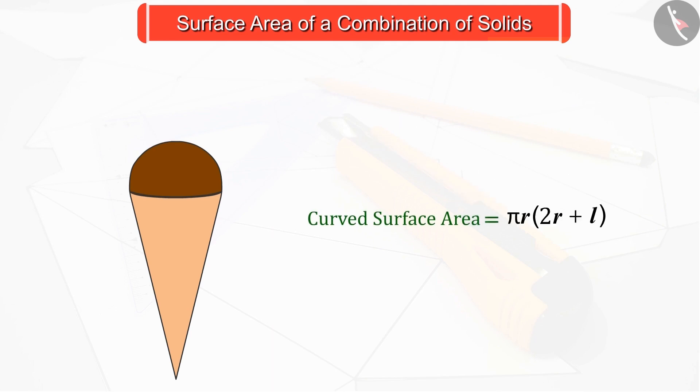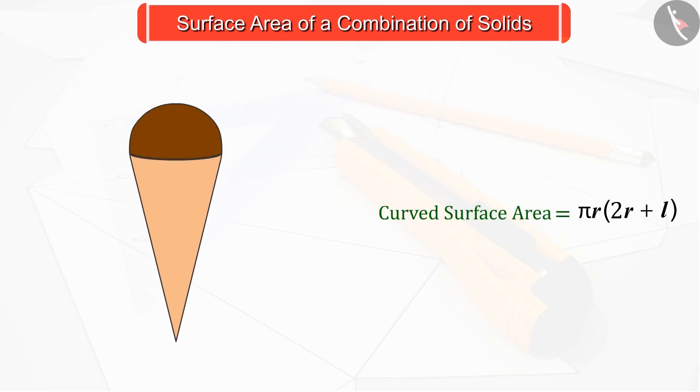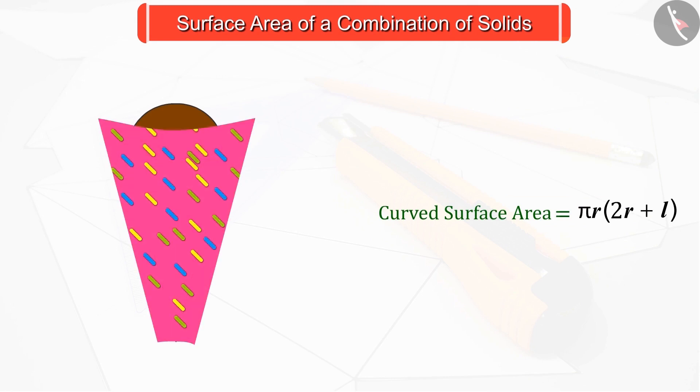We obtain the curved surface area of an ice cream cone as πr(2r + l). You can see that the paper used to pack the ice cream cone will be equal to the total curved surface area of the cone.